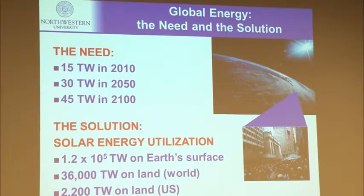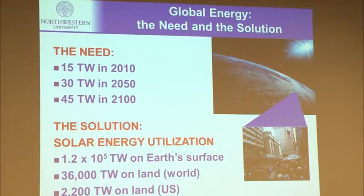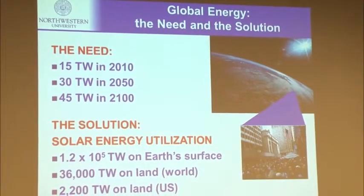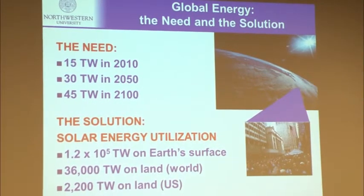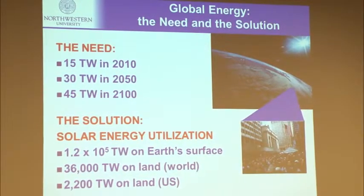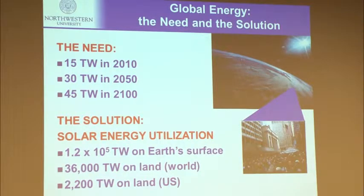The only source with the capacity and resilience to meet our needs is really solar energy, because we get a whole lot of solar energy impinging on the Earth constantly. We don't even have to be that good to utilize enough of it. The statistics are compelling: we can generate 2,200 terawatts on the landmass of the US alone, when we need only a small fraction. This doesn't mean we have to cover the entire state of Arizona with solar panels — we can utilize surfaces like building materials and roofs throughout the country.